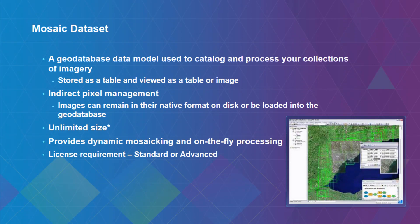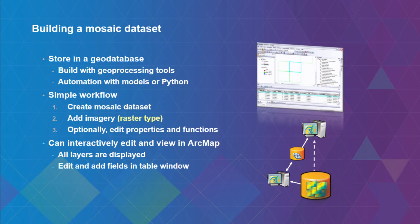The license requirement for creating a Mosaic dataset — but not viewing one — is standard or advanced. So if you have a basic license, you can't edit Mosaic datasets. In its most basic form, building a Mosaic dataset is fairly simple. You create a Mosaic dataset in a geodatabase, then you add imagery. There's this concept called a raster type — a pre-cooked template for different sensor types. So if you have Landsat data, you just point to your Landsat folder, choose the Landsat raster type, and it automatically ingests all the key metadata without you having to know anything about Landsat. We have about 40 of them, ranging across several different satellites.